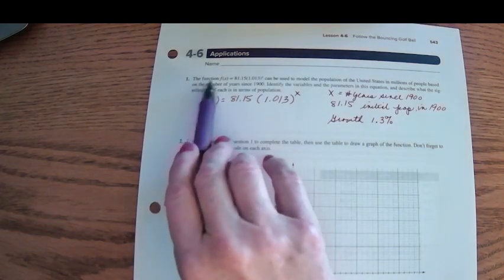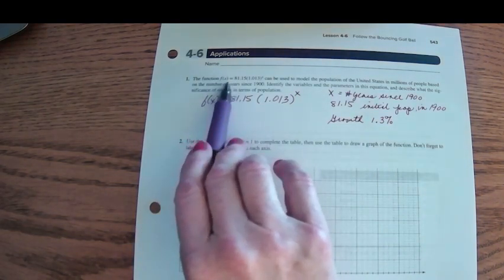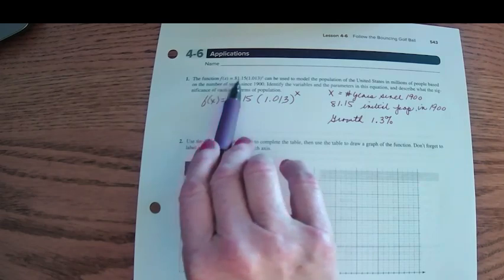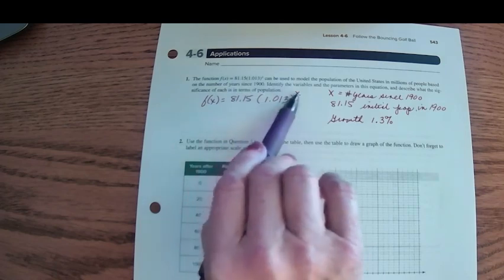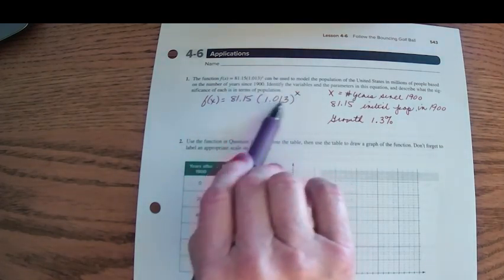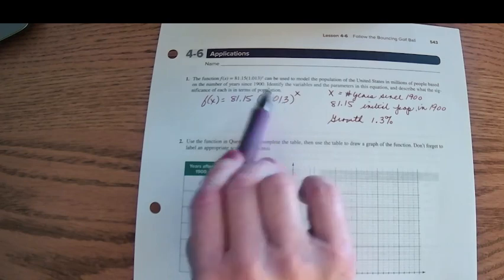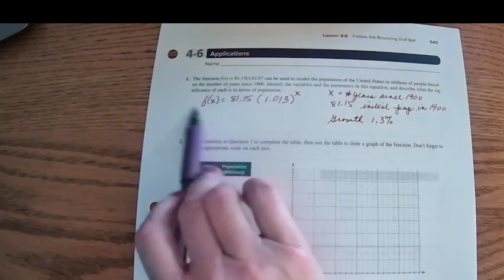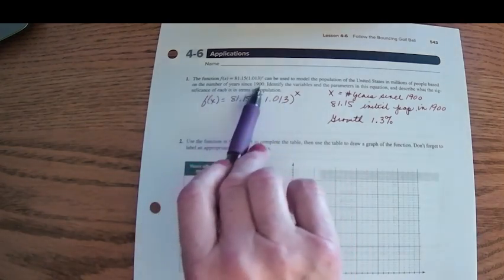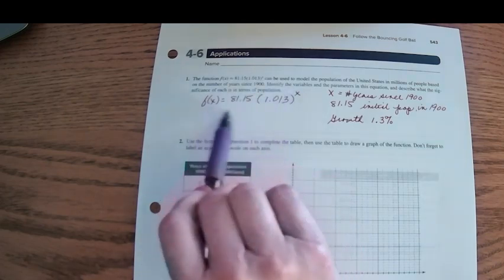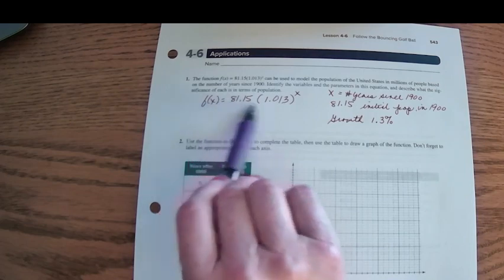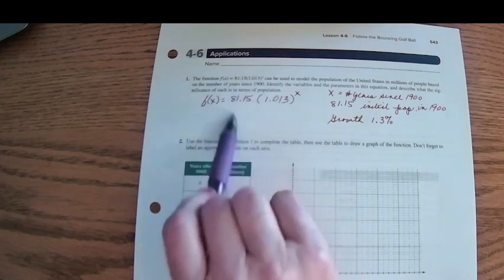Number 1 says the function f(x), which is going to be the result of our calculation, is 81.15 times 1.013 raised to the x. This is used to model population growth in the United States in millions based on the number of years since the year 1900. And so they want us to look at this function and what do all the pieces mean?